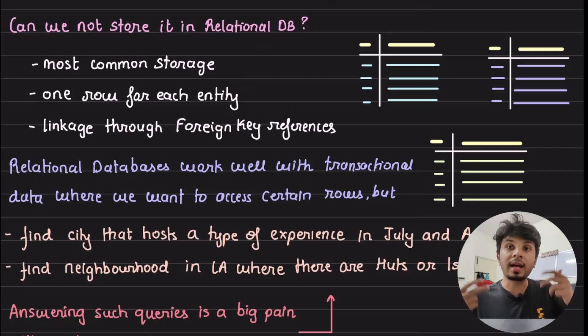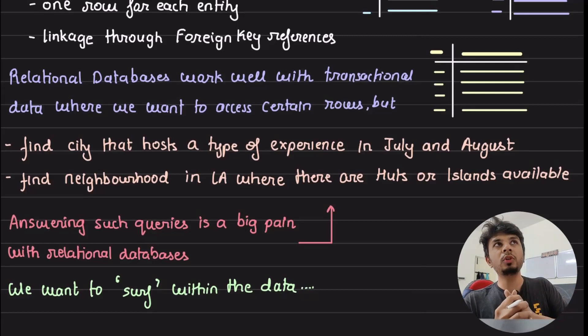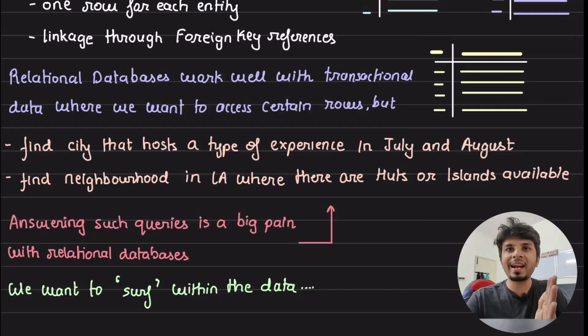But when a traveler wants to book something for Airbnb, the requirements are not very straightforward. They might, for example, want to take the user on this journey of finding a city that hosts a type of experience in July and August. For example, the user is trying to book a trip in the month of July and August, right?